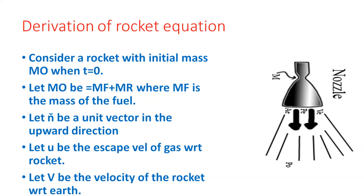Now let us have a mathematical treatment of this rocket launch. Let us consider the rocket with initial mass M₀ when t = 0. The initial total mass of the rocket is made up of two parts: mass of the fuel M_F and mass of the rocket M_R. So the total initial mass before launching is M₀ = M_F + M_R. For our derivation, let N-cap be a unit vector in the upper direction, let U be the escape velocity of the gas with respect to the rocket, and let V be the velocity of the rocket with respect to the earth.